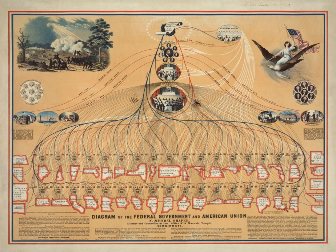The approval of both chambers is required to pass all legislation, which then may only become law by being signed by the president or, if the president vetoes the bill, both houses of Congress then re-pass the bill by a two-thirds majority of each chamber, in which case the bill becomes law without the president's signature. The powers of Congress are limited to those enumerated in the Constitution; all other powers are reserved to the states and the people.